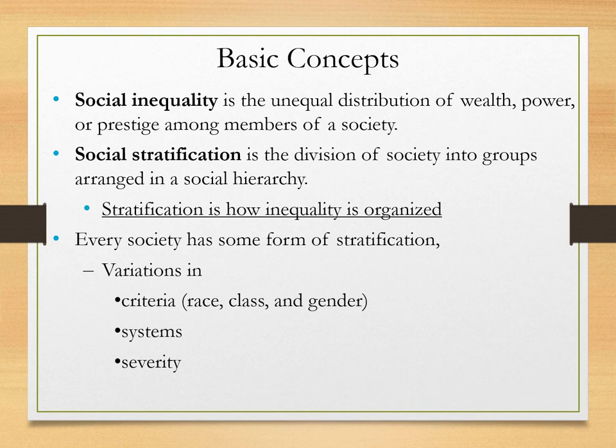Every society has some form of stratification, and variations on stratification include items such as criteria — which would be race, class, gender, social class, etc. — systems of stratification, and severity of stratification: how bad is it actually for those people being oppressed, and how good is it for those people really enjoying the benefits.